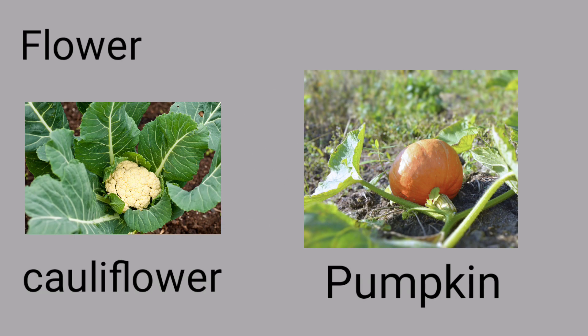Cauliflower, moringa, pumpkin — we use the flower as the edible part. That is why we use cauliflower as a vegetable.